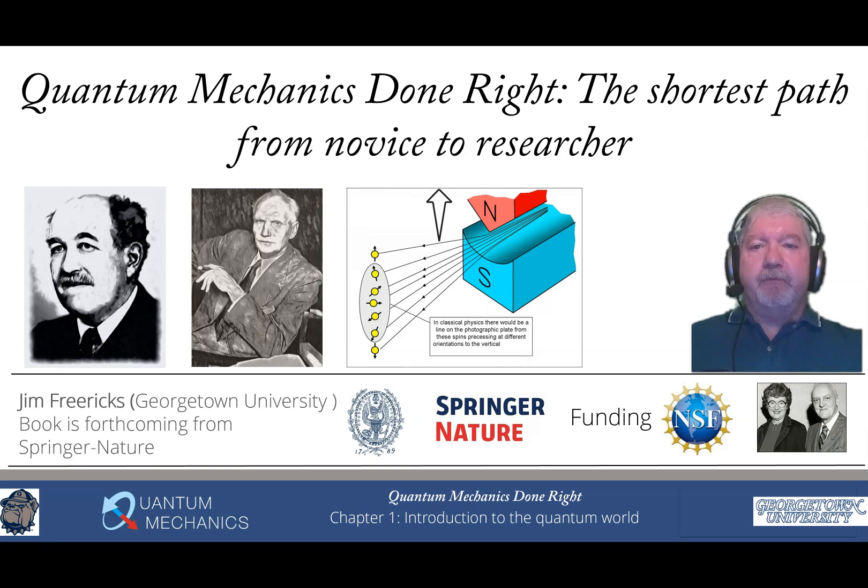Our first chapter is on the Stern-Gerlach experiment. You can see on the left Otto Stern and on the right Walter Gerlach and a schematic of what the Stern-Gerlach experiment does is to the far right. What this experiment does is it finds a very clever way of taking atoms that have some net magnetic behavior to them and separating them according to the precise orientation of the little magnets that are present on the atoms. It is remarkable that you can do this.